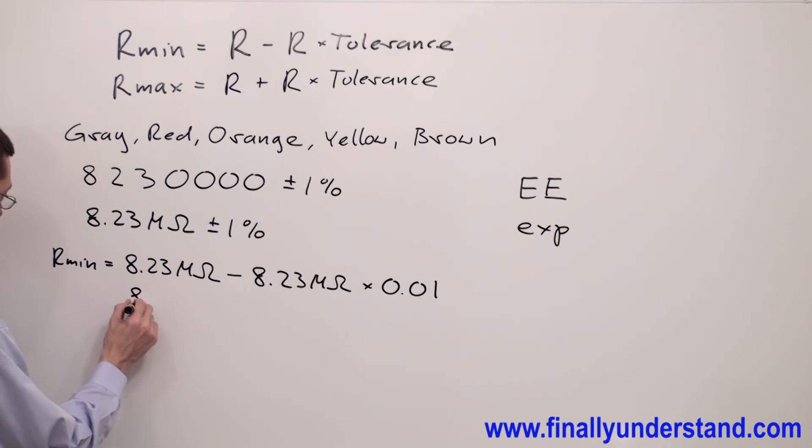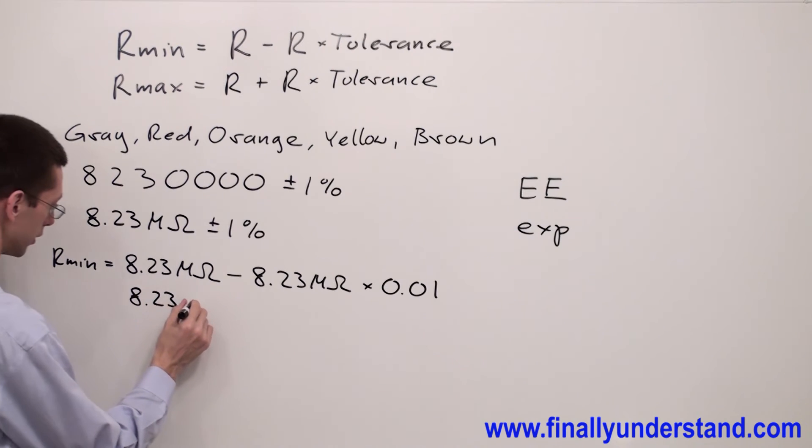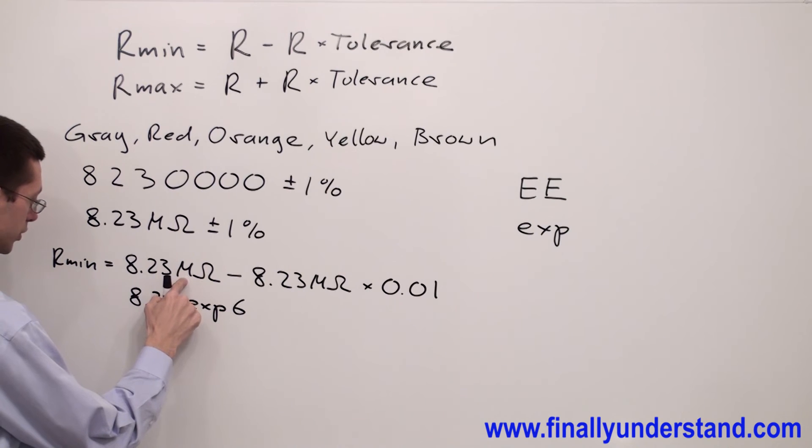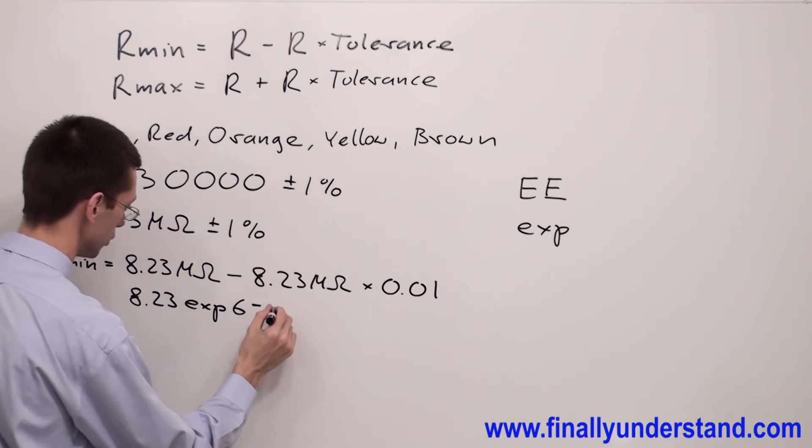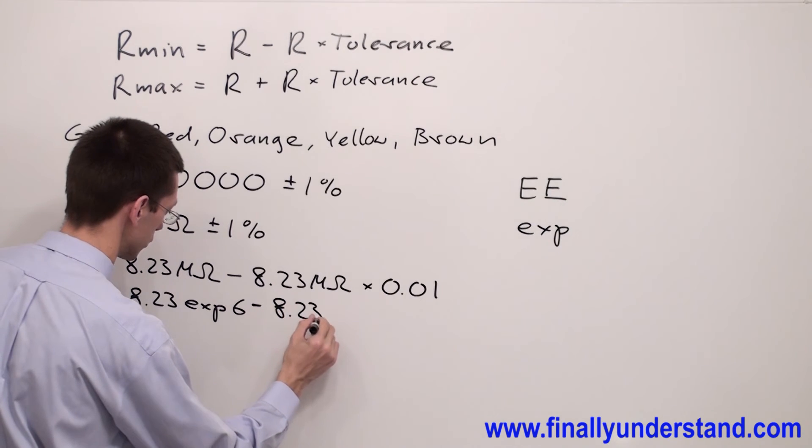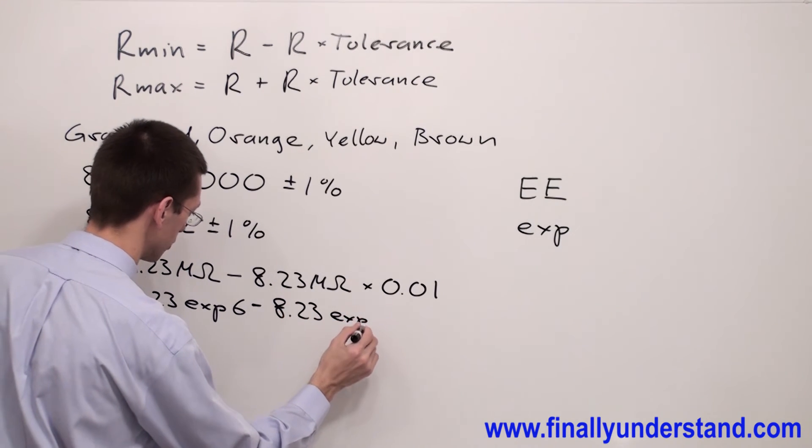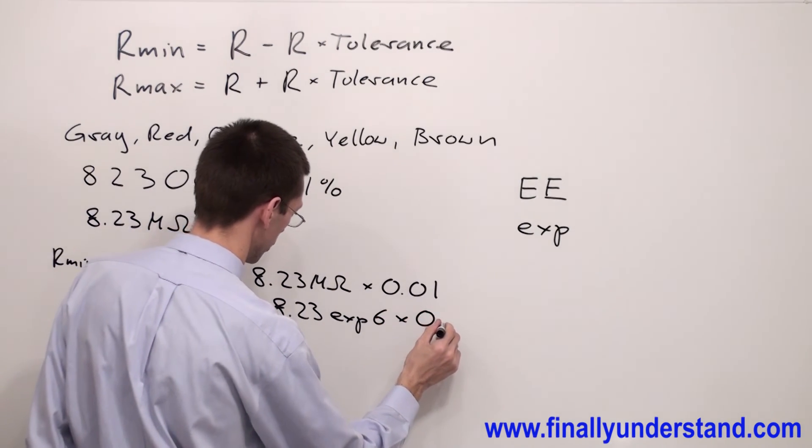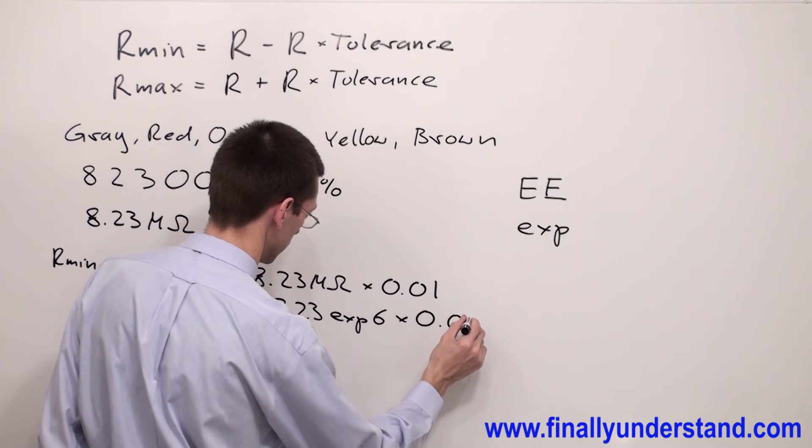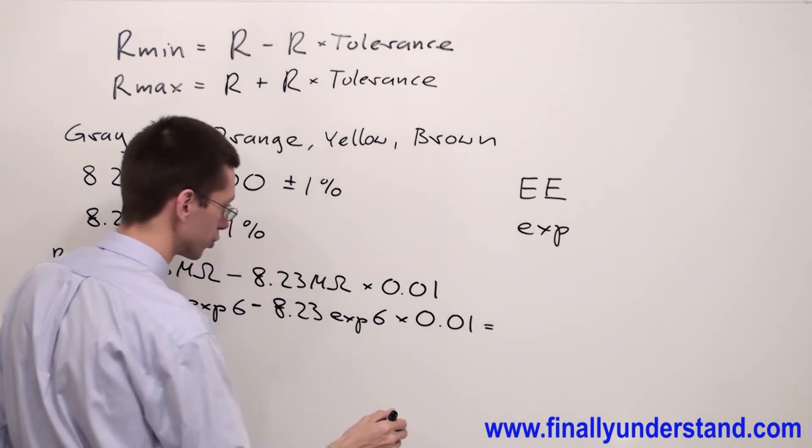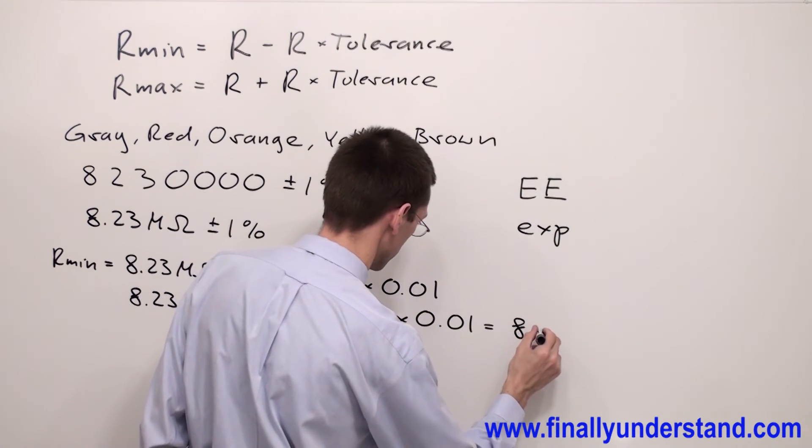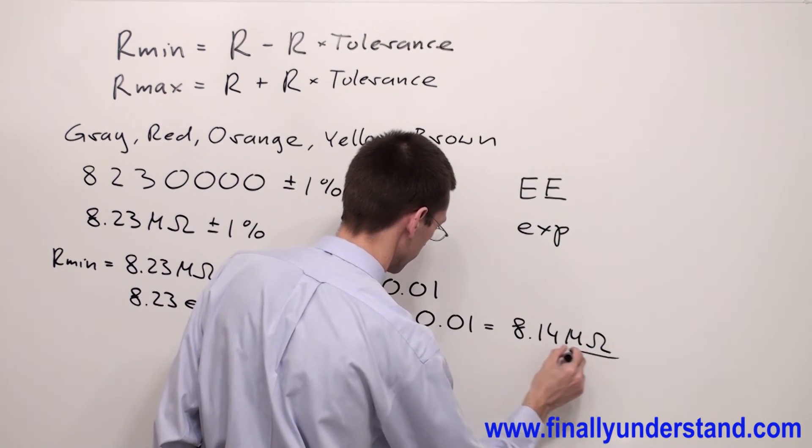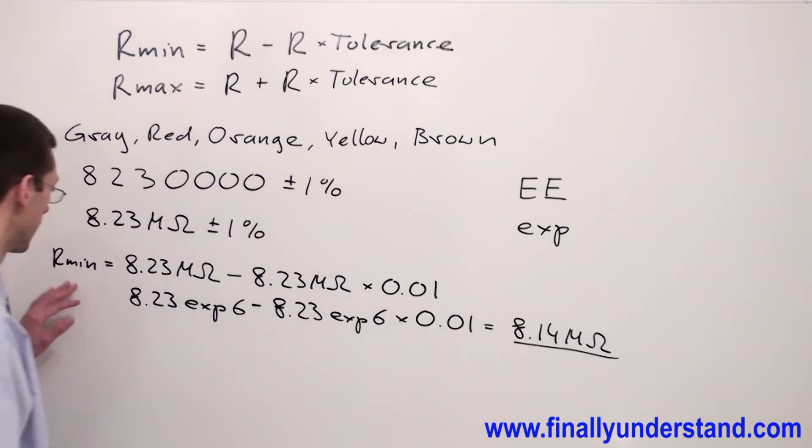I'm supposed to type 8.23 EXP 6, because mega represents the power of 10, 10 to the 6, minus 8.23 EXP 6 times 0.01. Your answer is supposed to be 8.14 mega ohms. This is the value of R minimum.